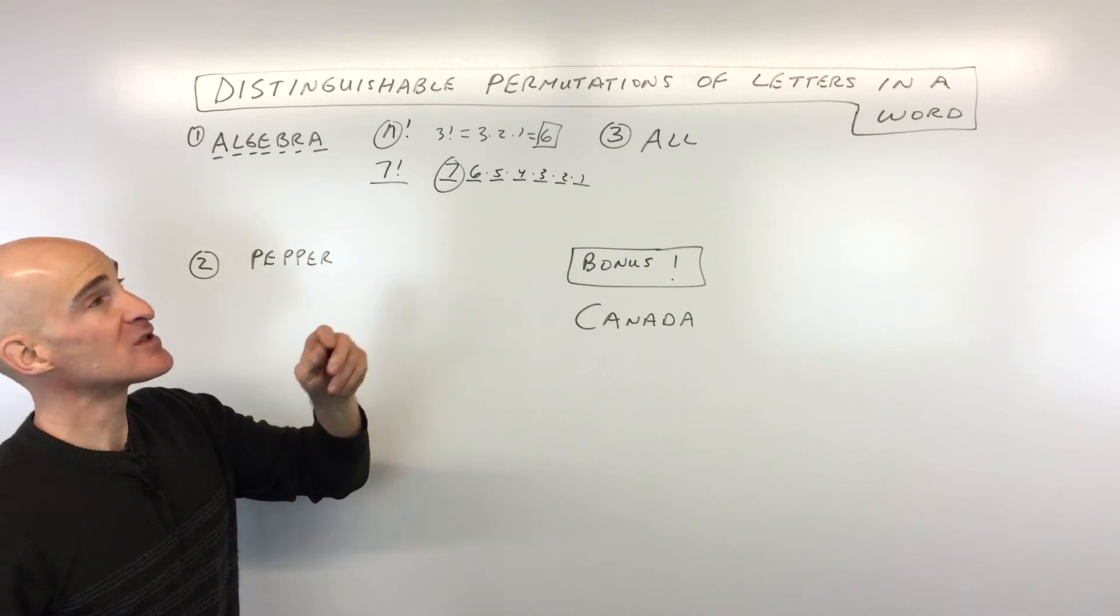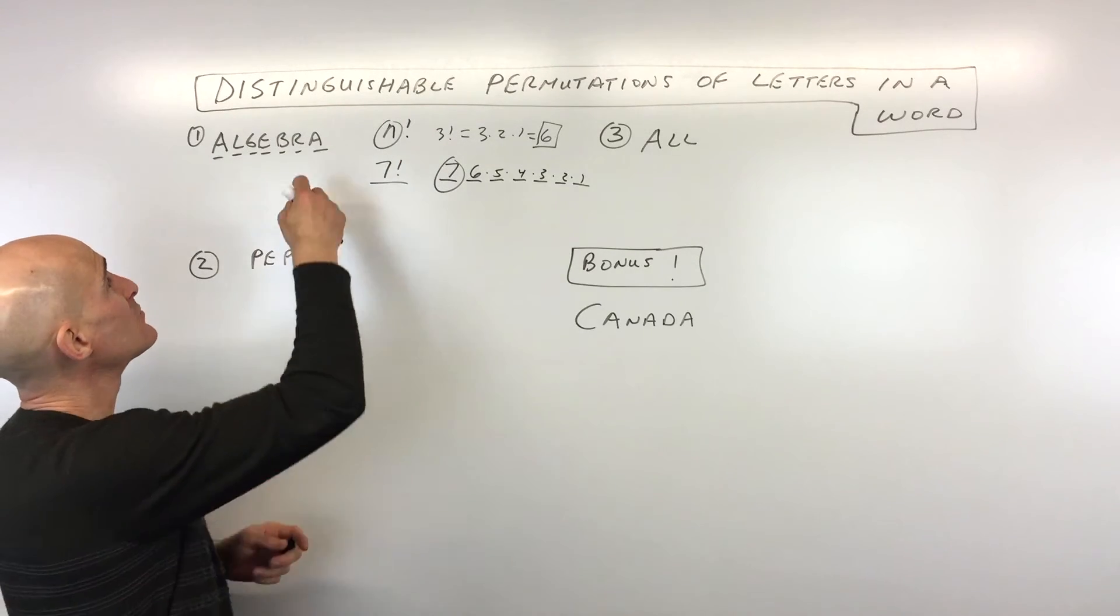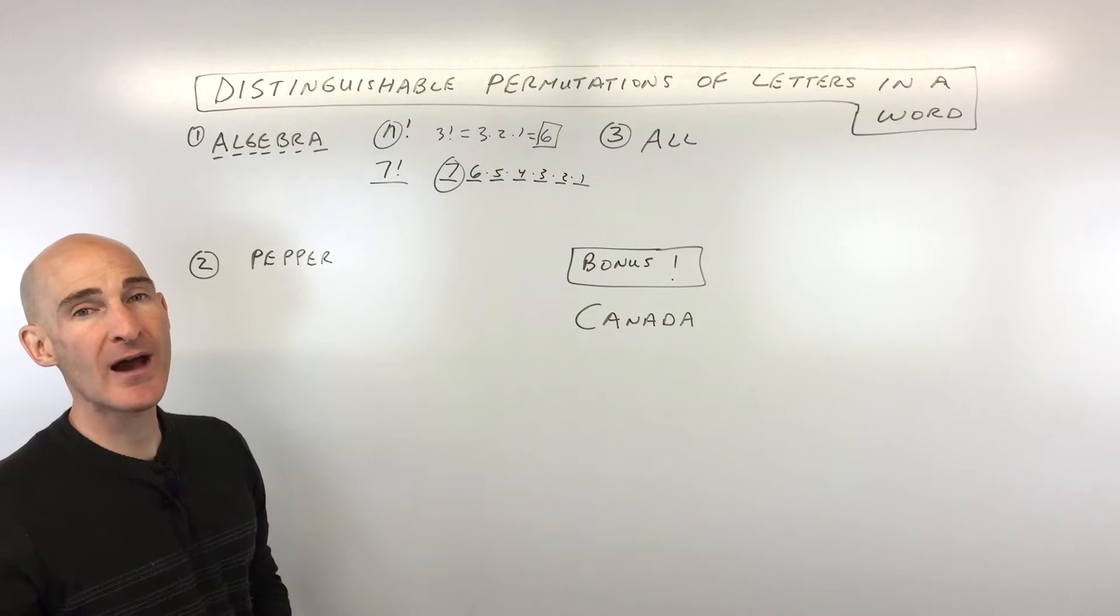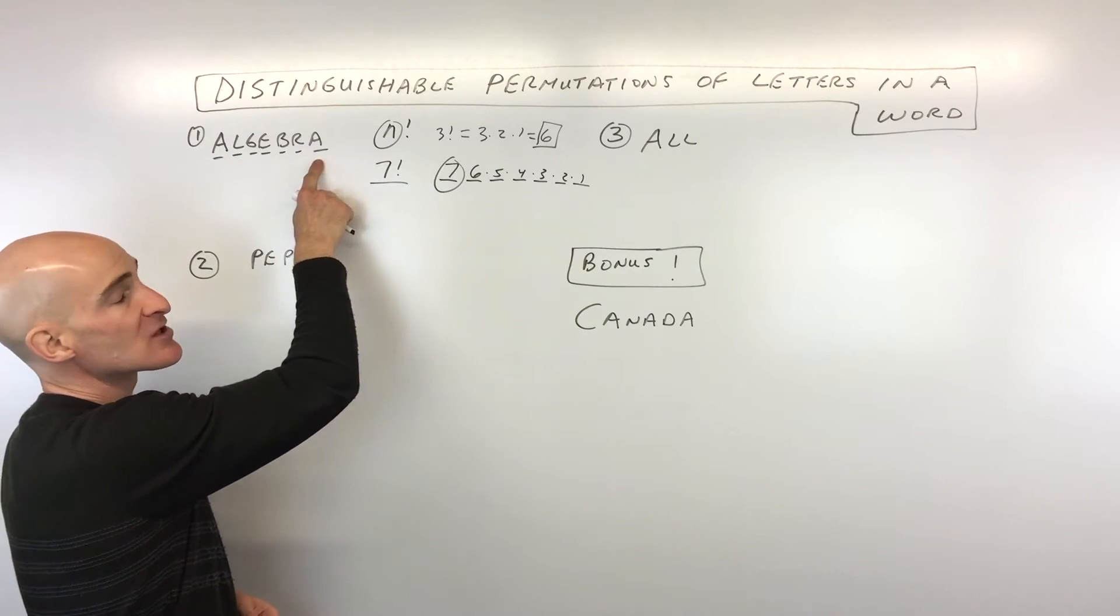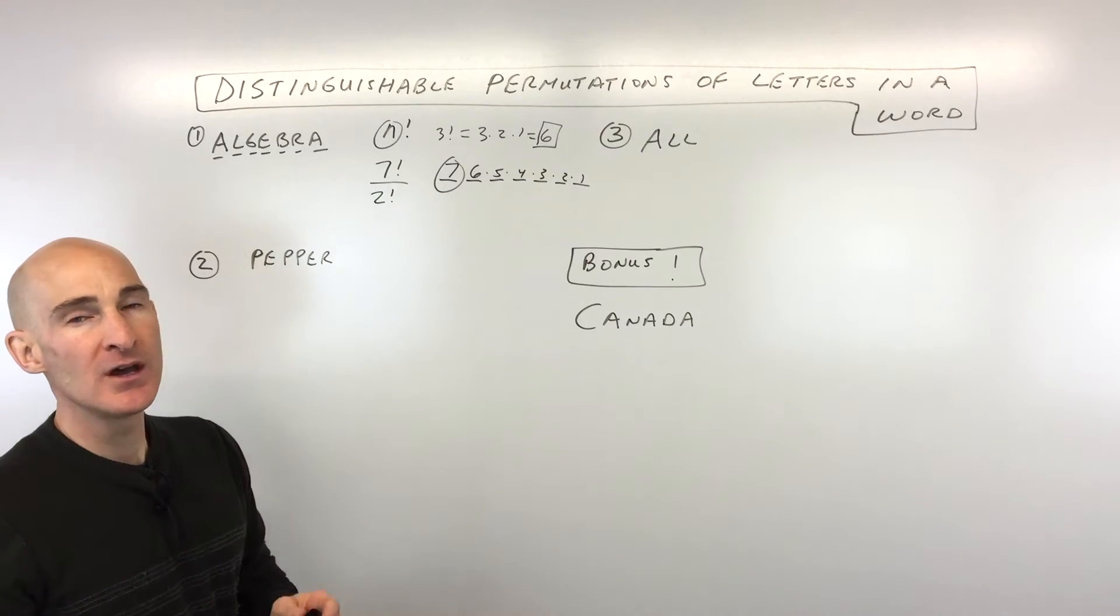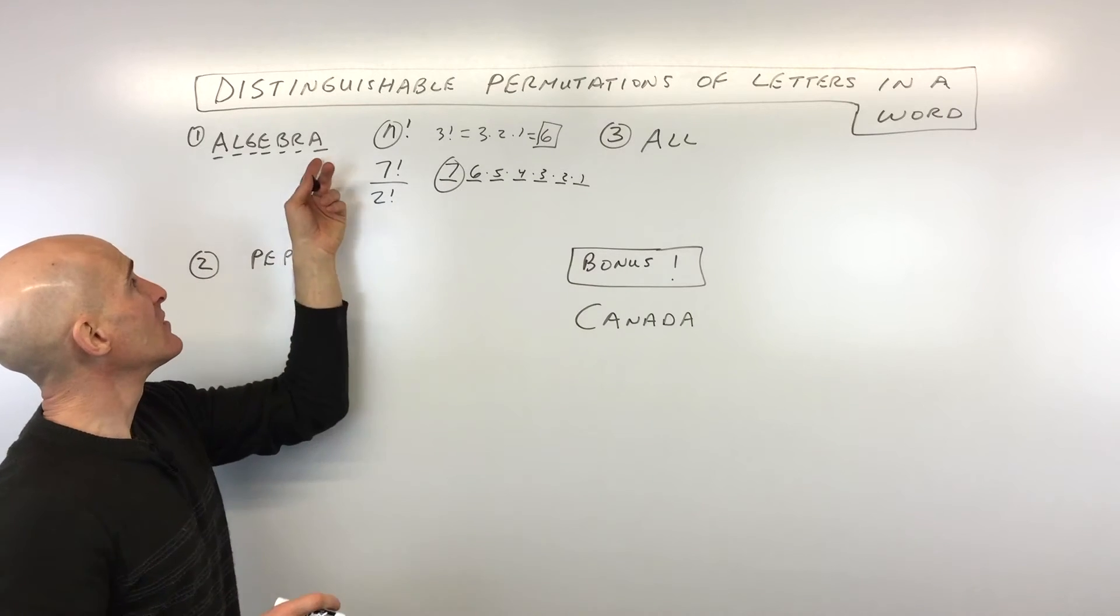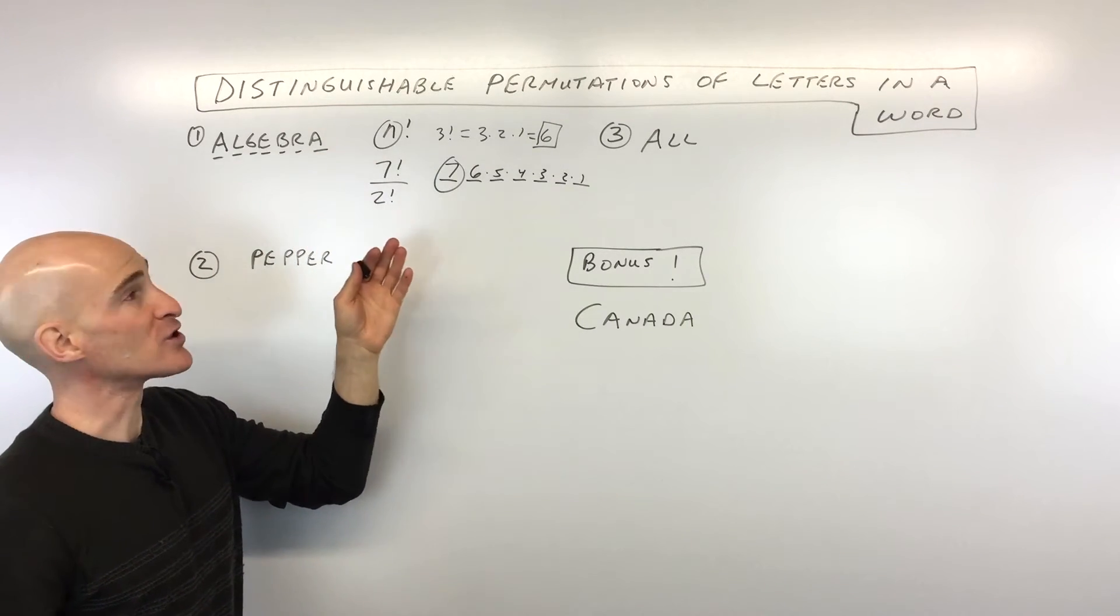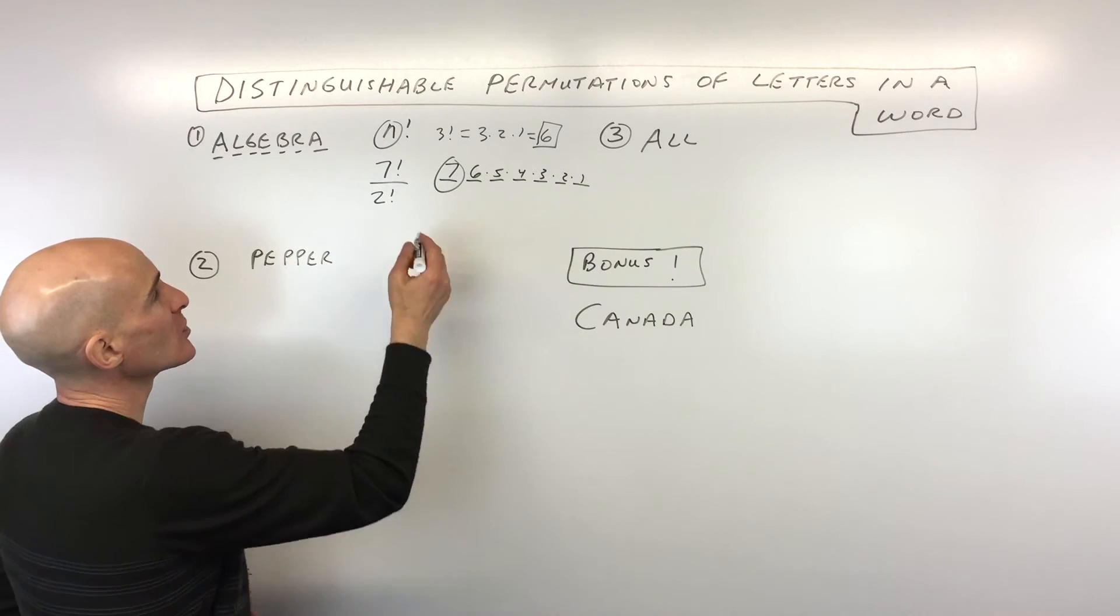The only problem is, though, is you see how it says distinguishable? That means that they look like they're different. If I just move this A over here to this A over here, like switch these two A's, it would still look like the word algebra. So what we have to do is we have to see if there's any repeated letters. Here you can see there's two A's that are repeated. So I'm going to divide by two factorial. Two factorial is just two times one. That means there's two different ways of arranging these A's such that it wouldn't really look like a different word. So we have to divide out those multiplicities.